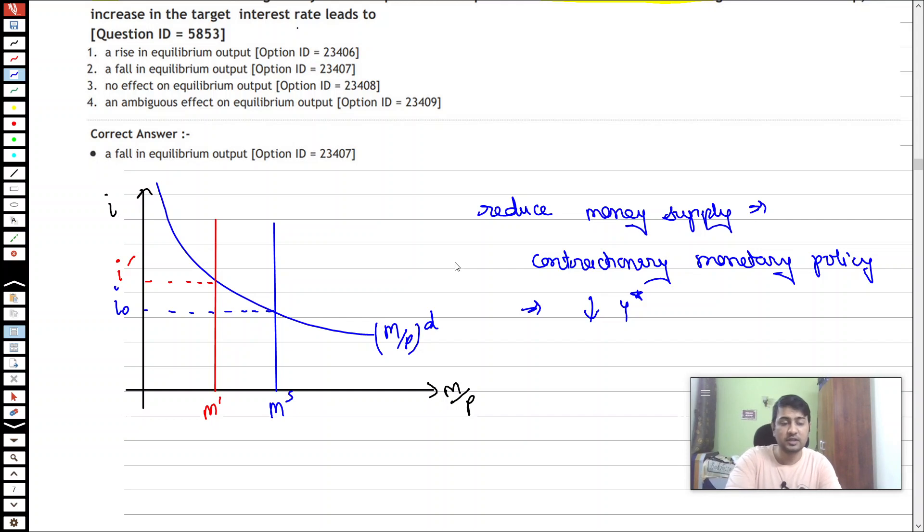I know that a contractionary monetary policy will inevitably reduce my equilibrium output. That is why we will see a fall in equilibrium output here.